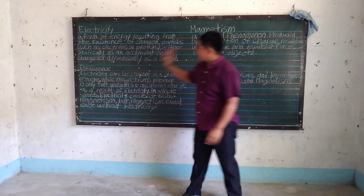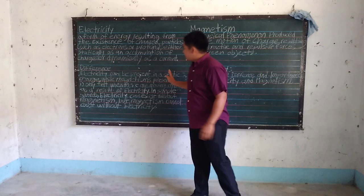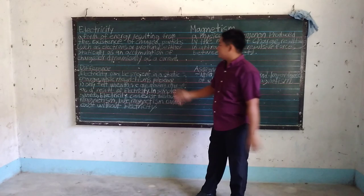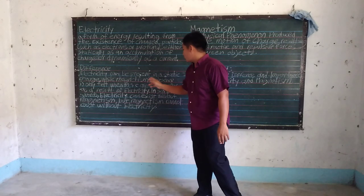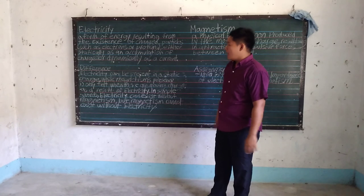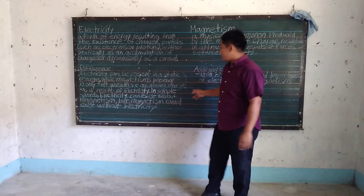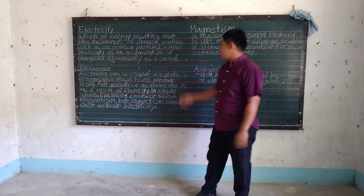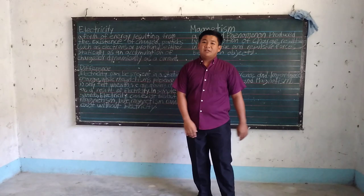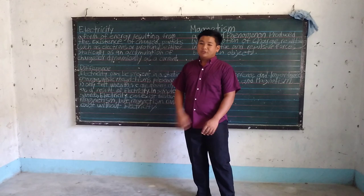Their difference: electricity can be present in a static charge, while magnetism's presence is only felt when there are moving charges. In simple words, electricity can exist without magnetism, but magnetism cannot exist without electricity.